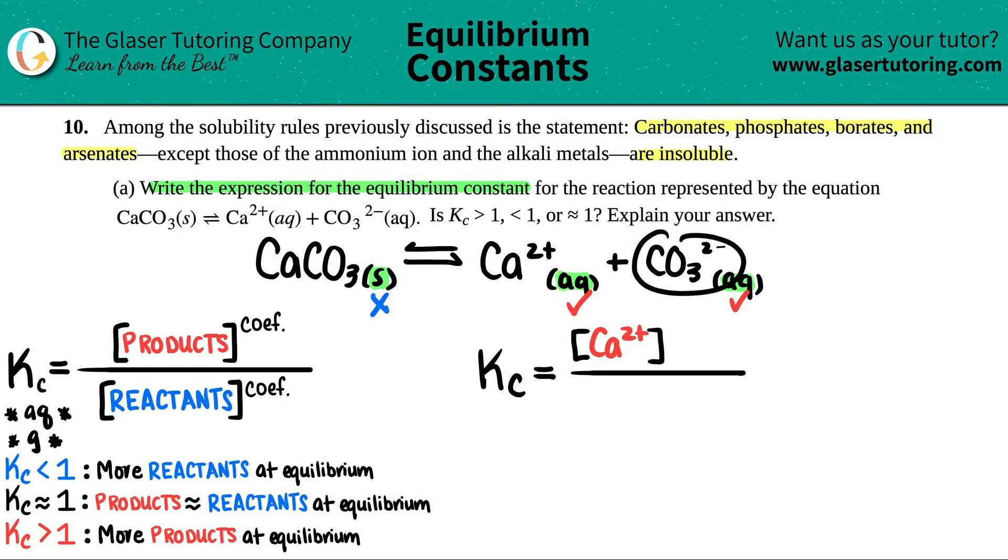Now I have another product. When you have multiple products, it's multiplication. I'm just going to put the two brackets next to each other. And that's CO3, 2 minus, close the bracket. And now my top part is all finished.